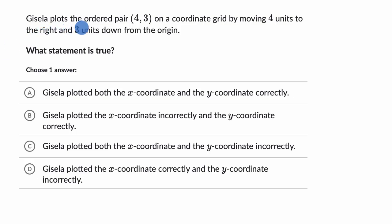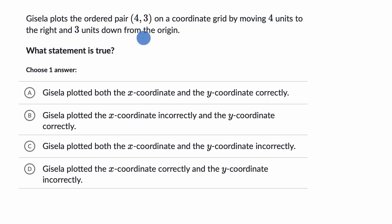We're told Gisela plots the ordered pair four comma three on a coordinate grid by moving four units to the right and three units down from the origin. Which statement is true? Pause this video and have a go at this before we do this together.